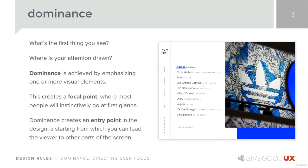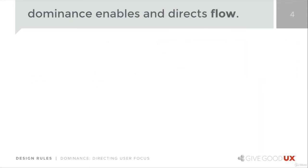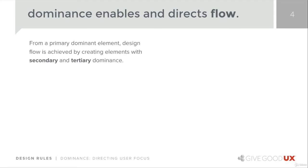It's a lot like if you've ever seen a sign with a big red dot that says 'you are here' when you're trying to navigate toward something. Dominance does the same thing — it tells you where you are right now or where you should start. Dominance enables and directs the flow we're talking about. So from a primary dominant element, from your starting point, design flow is achieved by creating elements with secondary and tertiary dominance.